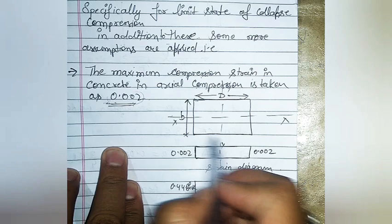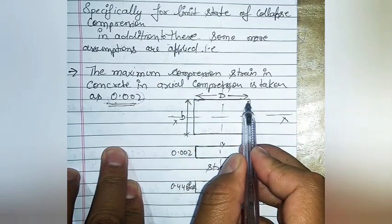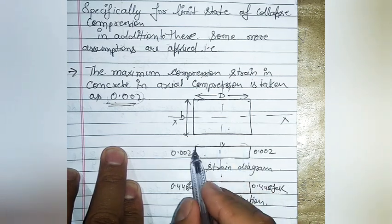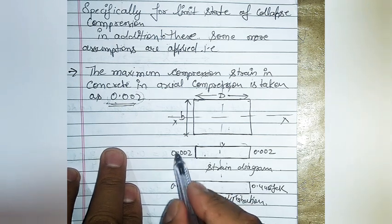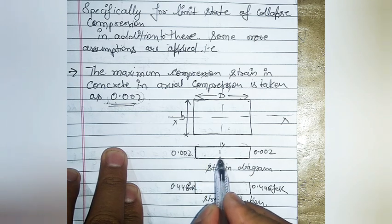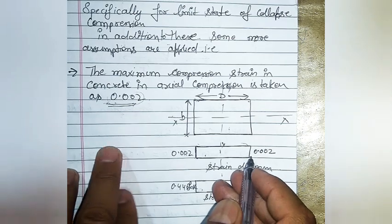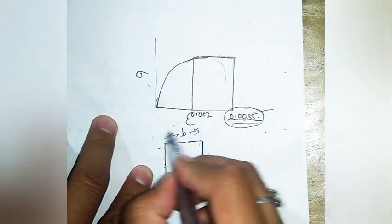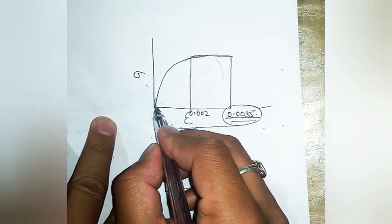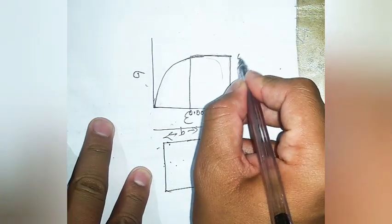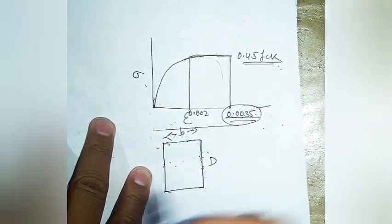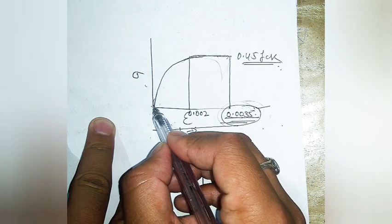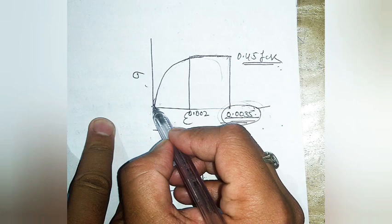Let us understand this assumption. For a column section of width B and depth D, the maximum strain diagram under axial compression is uniform. The maximum strain at the outermost compression fiber is taken as 0.002 instead of 0.0035. This is because, from the stress-strain curve for concrete, the concrete gains its maximum strength of 0.45fck at a strain of 0.002.